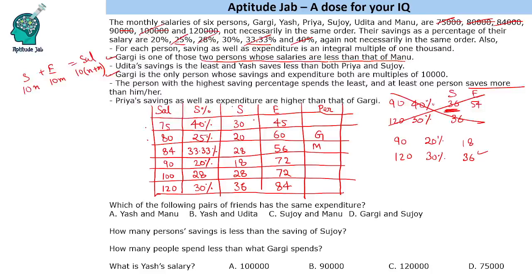Now we map names. Udita's savings are the least — that's 18,000, so Udita earns 90,000. Yesh saves less than both Priya and Sujoy, so Yesh must be the person with savings of 30,000 (75k salary), and Priya and Sujoy are among those with higher savings. Priya's savings and expenditure are both higher than Gargi's (20k savings, 60k expenditure), so Priya earns 120,000. That makes Sujoy the person earning 75,000 — wait, Yesh is 75k — so Sujoy is the 84k person.